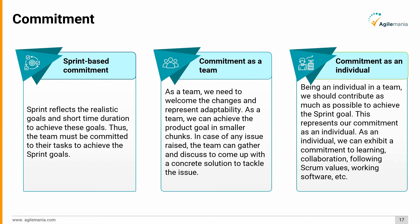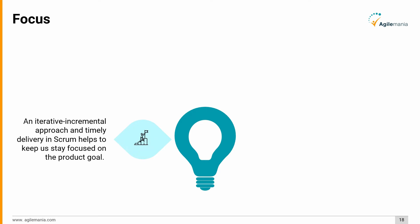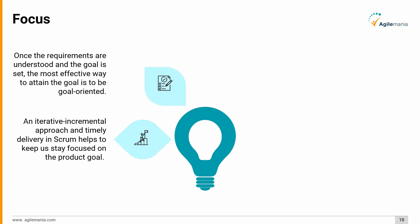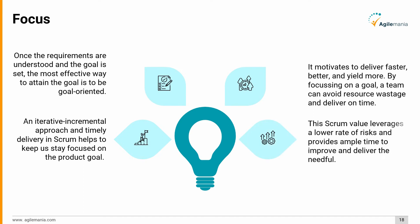Next, focus: an iterative incremental approach and timely delivery in Scrum helps keep us focused on the product goal. Once requirements are understood and the goal is set, the most effective way to attain it is to be goal-oriented. It motivates faster and better delivery by focusing on a goal. A team can avoid resource wastage, deliver on time, leverage a lower rate of risk, and have ample time to improve and deliver.